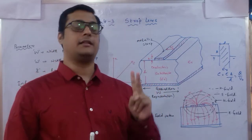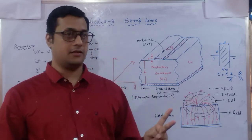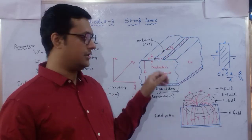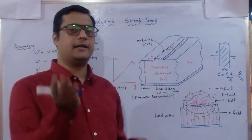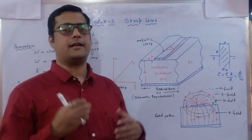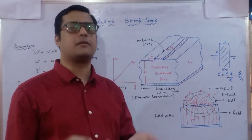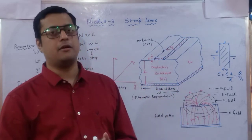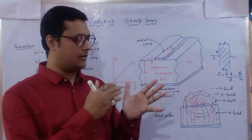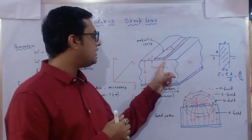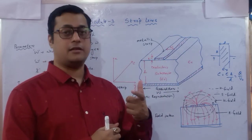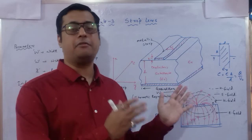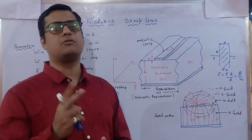For the microstrip line, we will determine two key parameters: first, the effective dielectric permittivity, because there are three media — metallic, dielectric, and metallic — whose combination changes the relative permittivity value. Second, we will derive the characteristic impedance for this microstrip line.